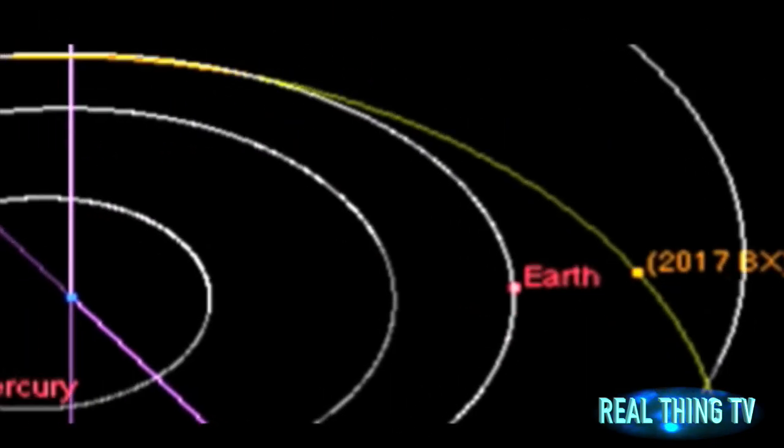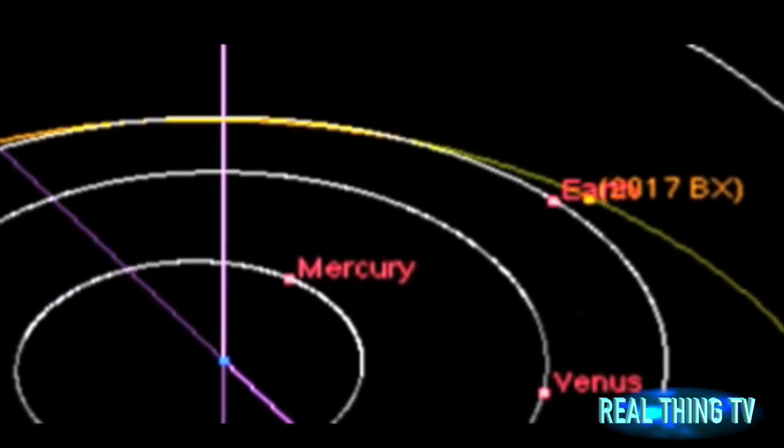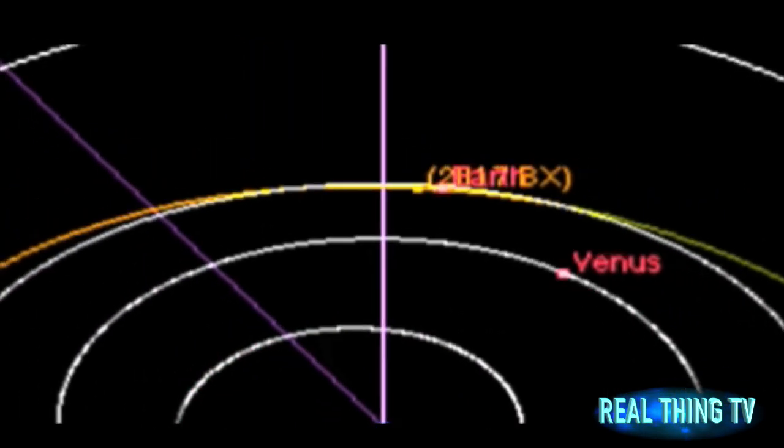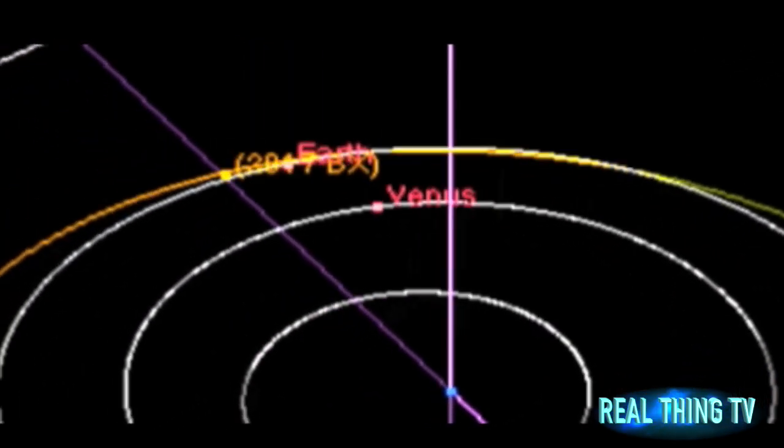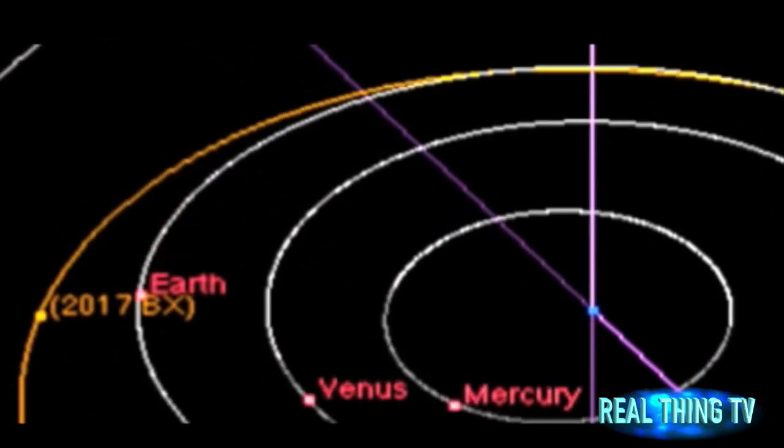The asteroid, called 2017 BX, is about the size of a bus, according to NASA's Asteroid Watch tracker. NASA estimates that the object is about 28 feet wide.